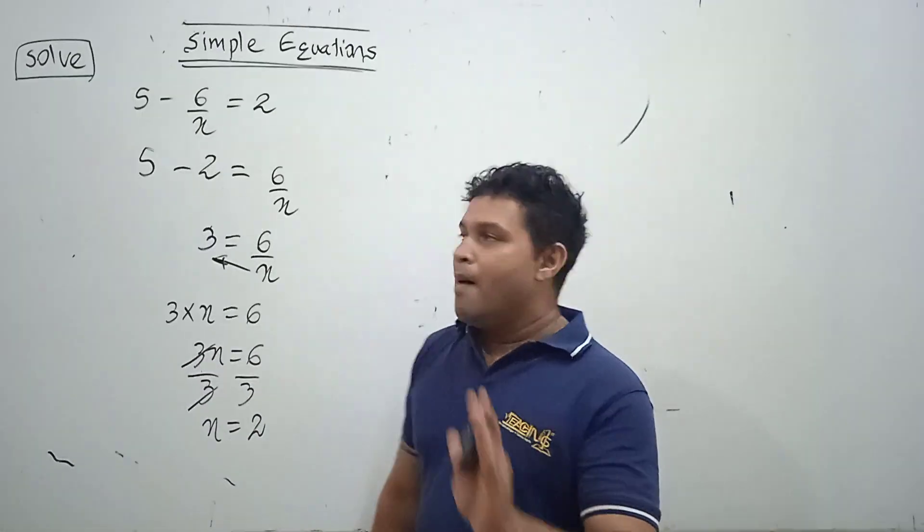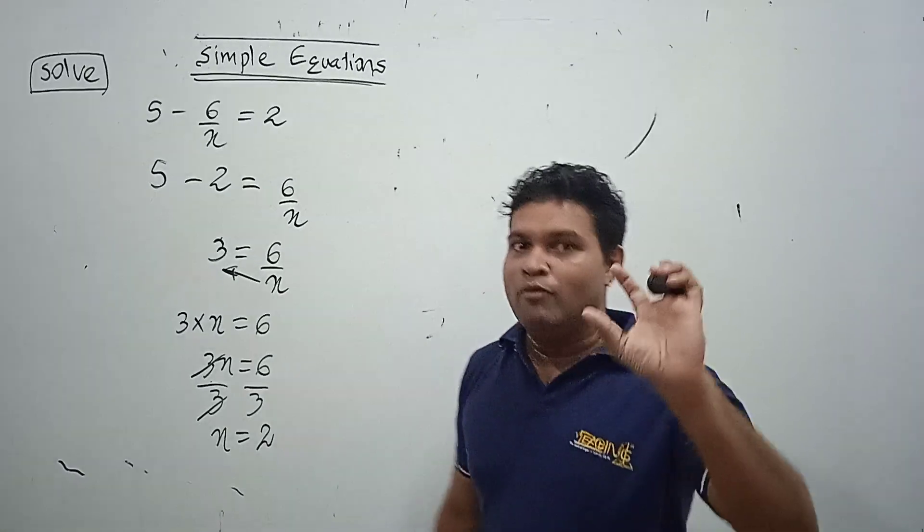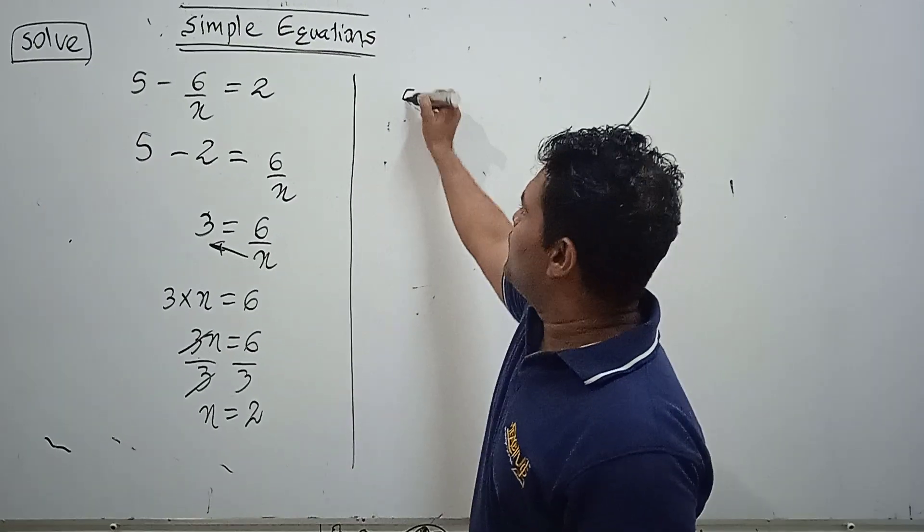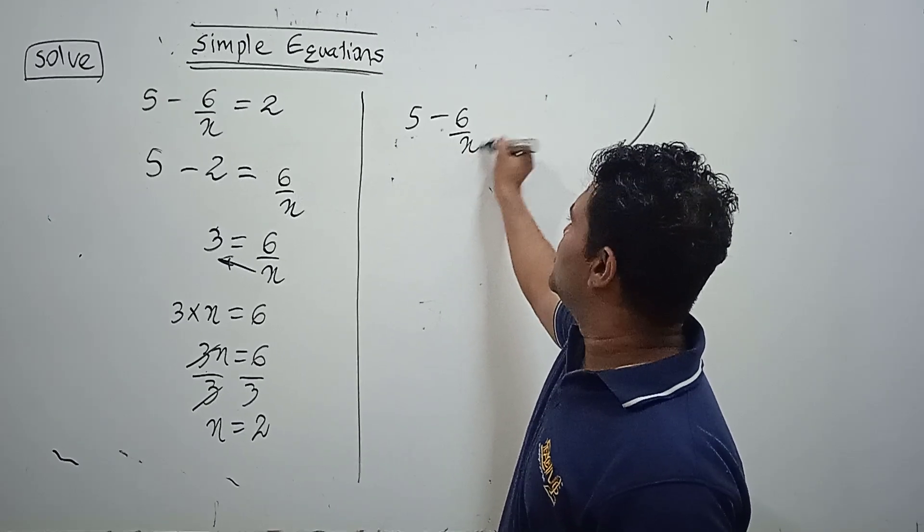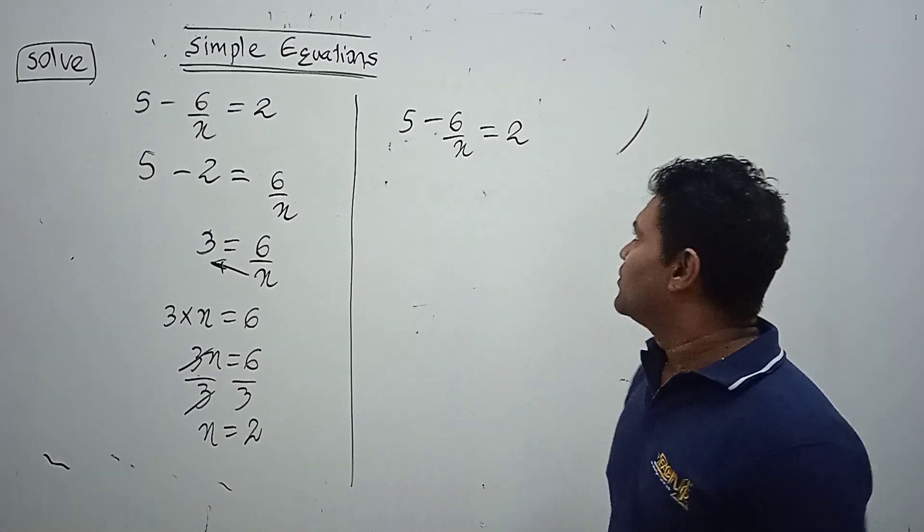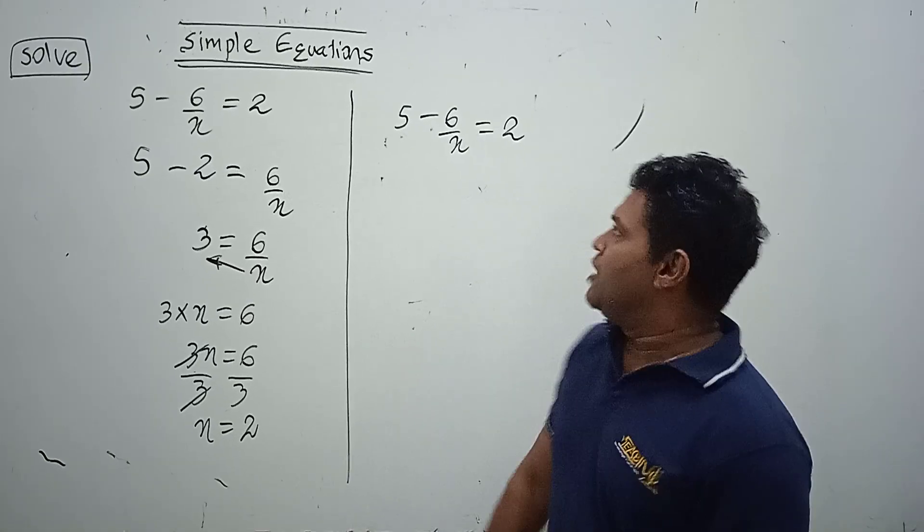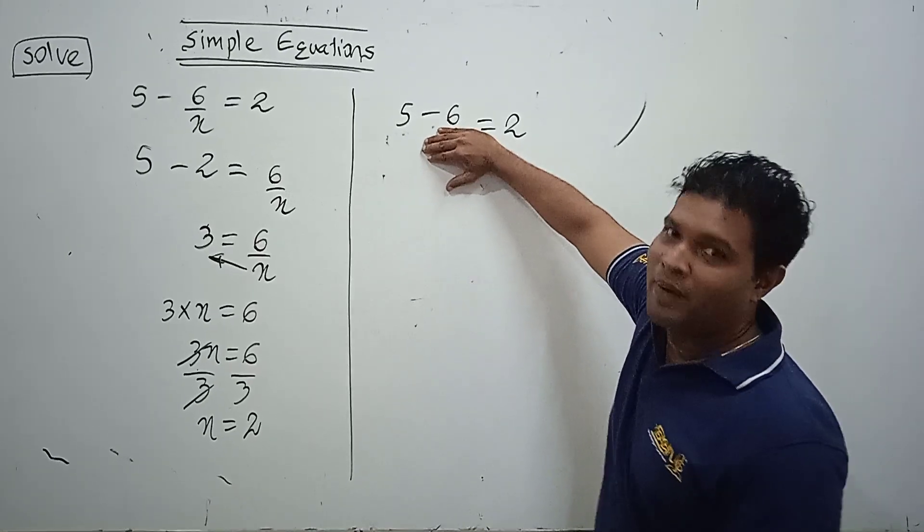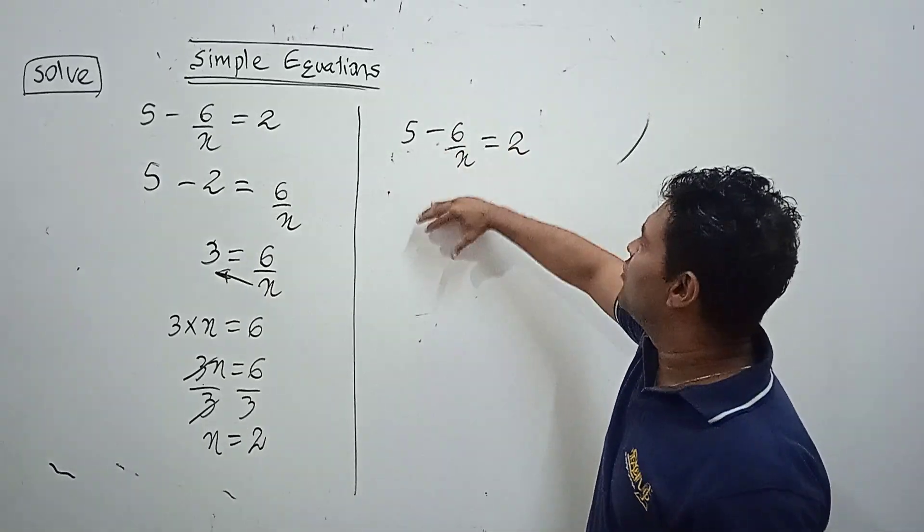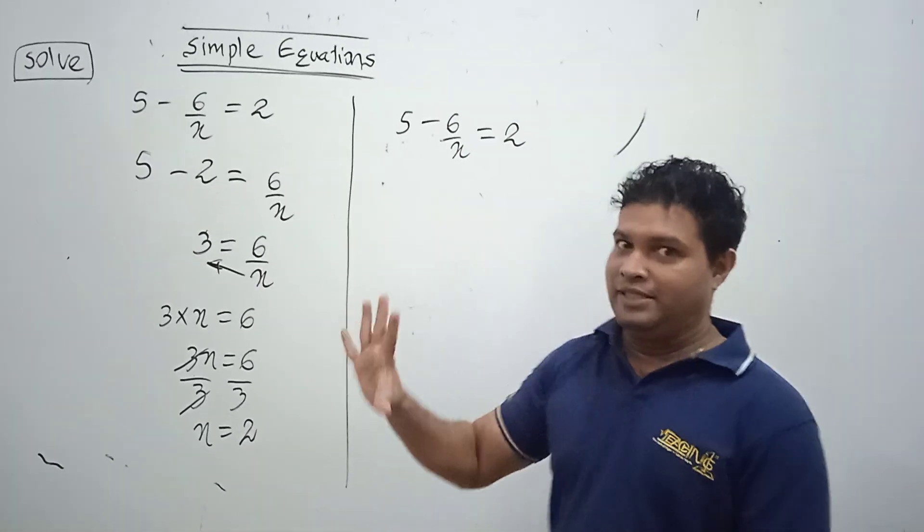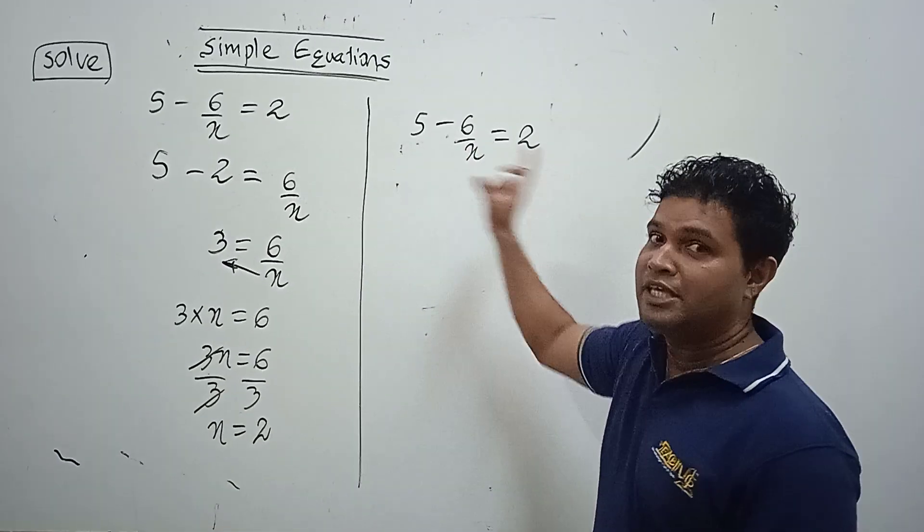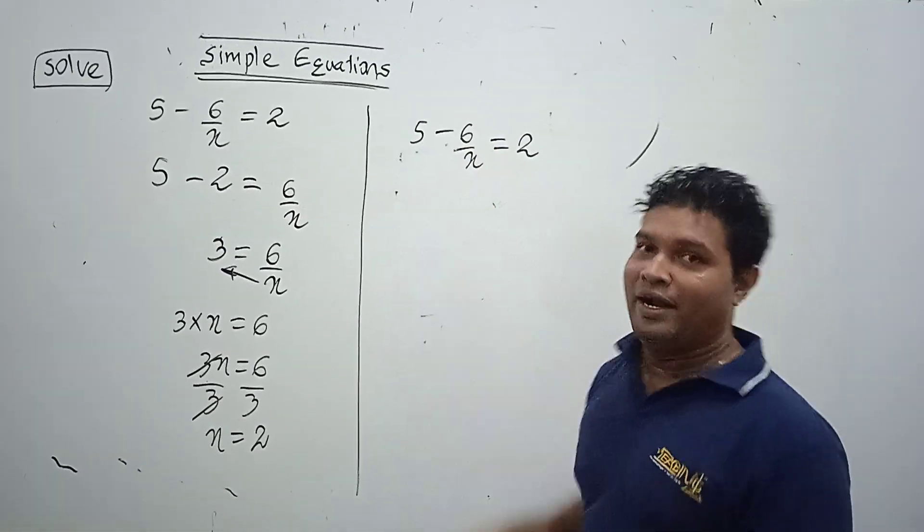But this is only one of the methods. If I write the same question to do in a separate method, easier method other than this, see if you don't have this denominator part how easy is that. Therefore, to remove this denominator part, there's a method we can multiply each and every term in this equation by the denominator part.